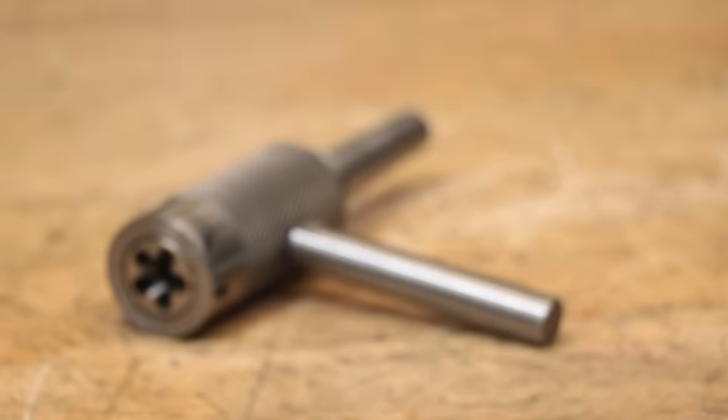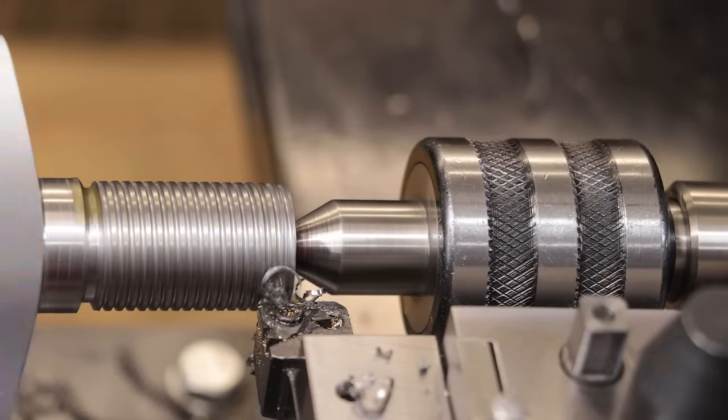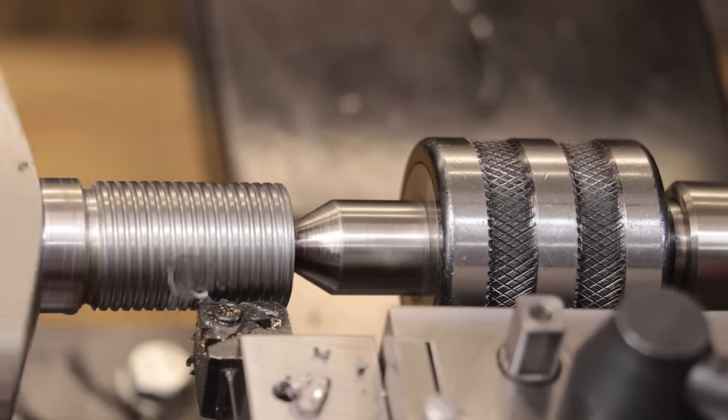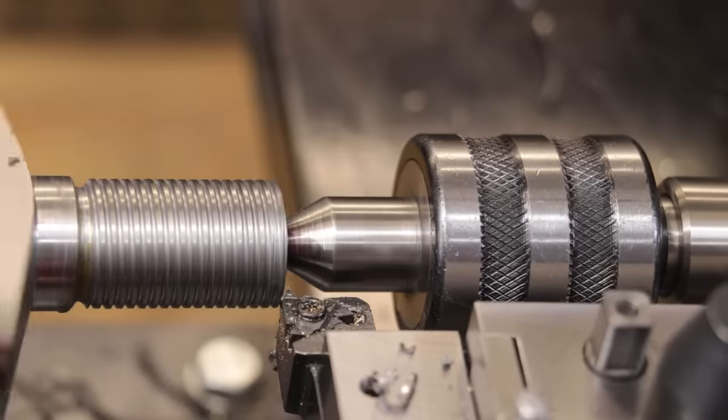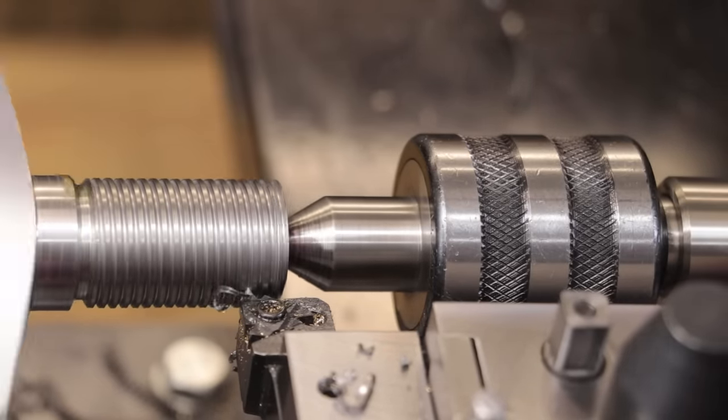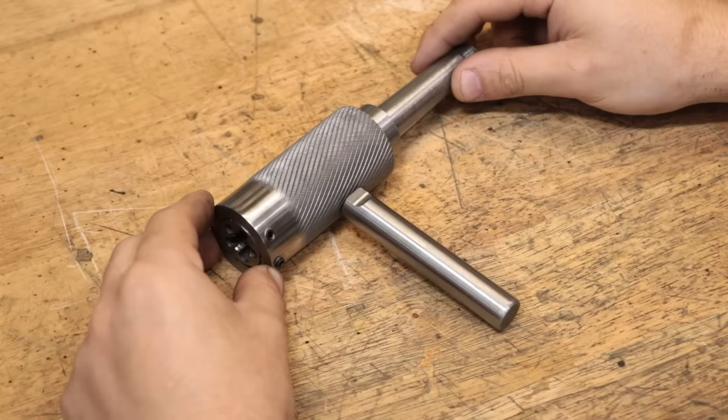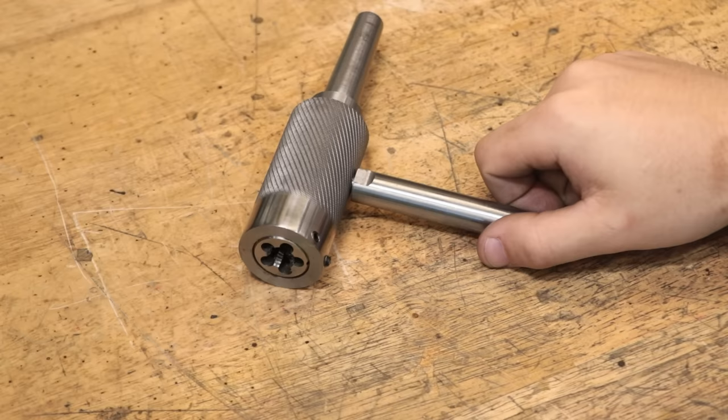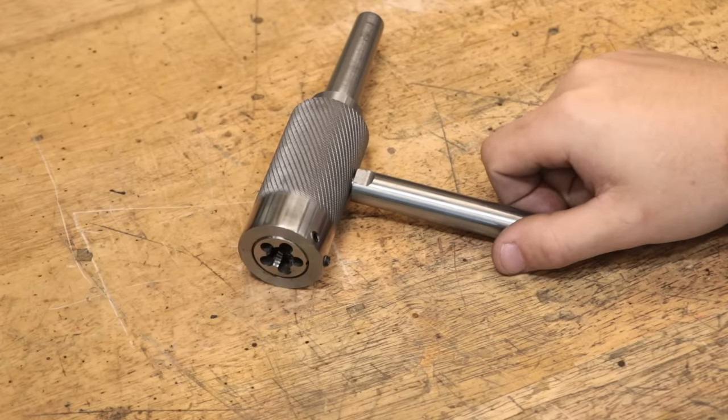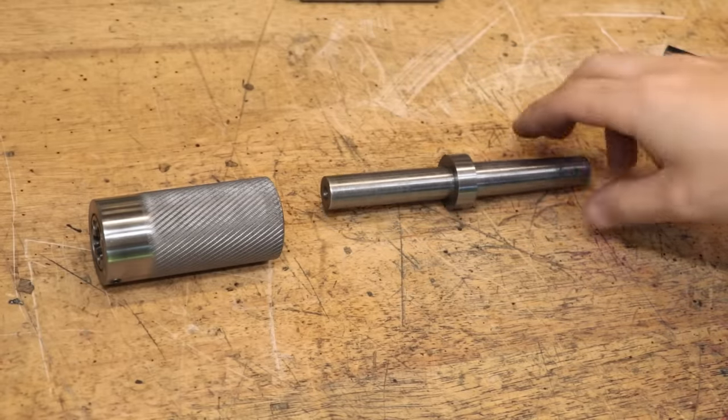Moving on from the tap follower, the next project should complement the previous one, and that's to make a tailstock die holder. Now I know some people really enjoy single point thread cutting, but me personally, I don't. I only really do it if I need to machine an uncommon or non-standard thread. In my opinion, it's simply quicker, and there's less risk of scrapping your part if you simply use a threading die. Now like the tap follower, a thread-mounted tailstock die holder is not a hugely complicated part, but you should try your best to make it as accurate as you can.